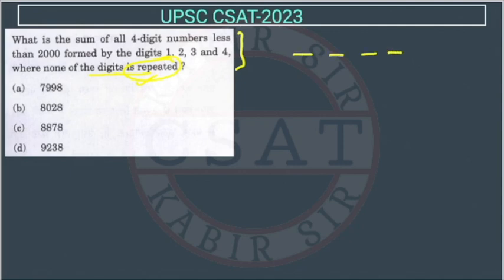This will be less than 2000. Here what will come? The one will come on this place. Then only the number will be less than 2000. Otherwise, it will become greater than 2000. So this is fixed.